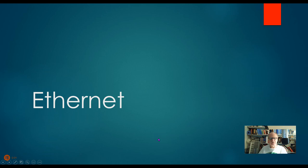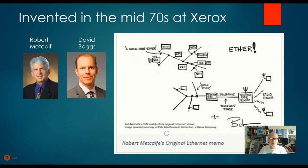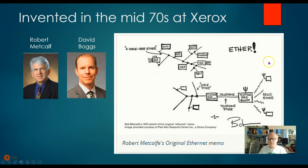Just as we did for Token Ring in the last video, let's take a quick, brief look at some of the history and a couple of things about Ethernet itself. It was designed in the 70s by these two guys, Robert Metcalfe and David Boggs, although Robert Metcalfe gets most of the credit for it.